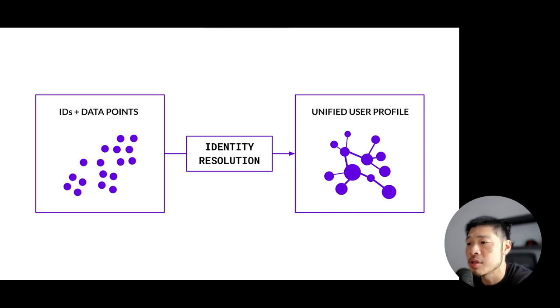The spokes are the different supporting data points relating back to each hub. These can be other identifiers, behavioral interests, or demographic data. Needless to say, ID graphs aren't static, they're dynamic, with new spokes being added as users interact with different devices and platforms. The hubs are also constantly updated and interconnected as more data becomes available, reflecting the evolving nature of a user's identity over time.